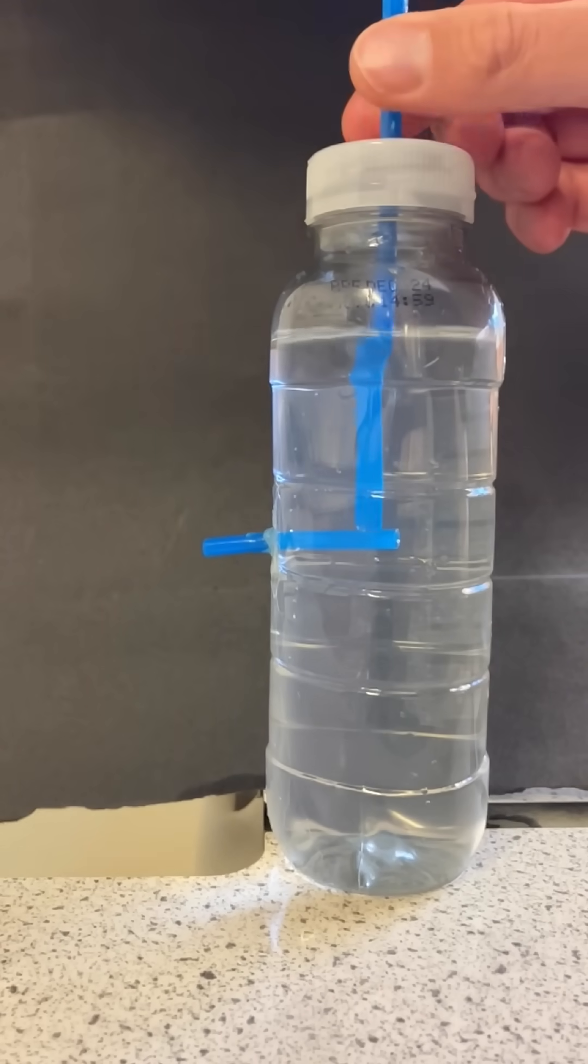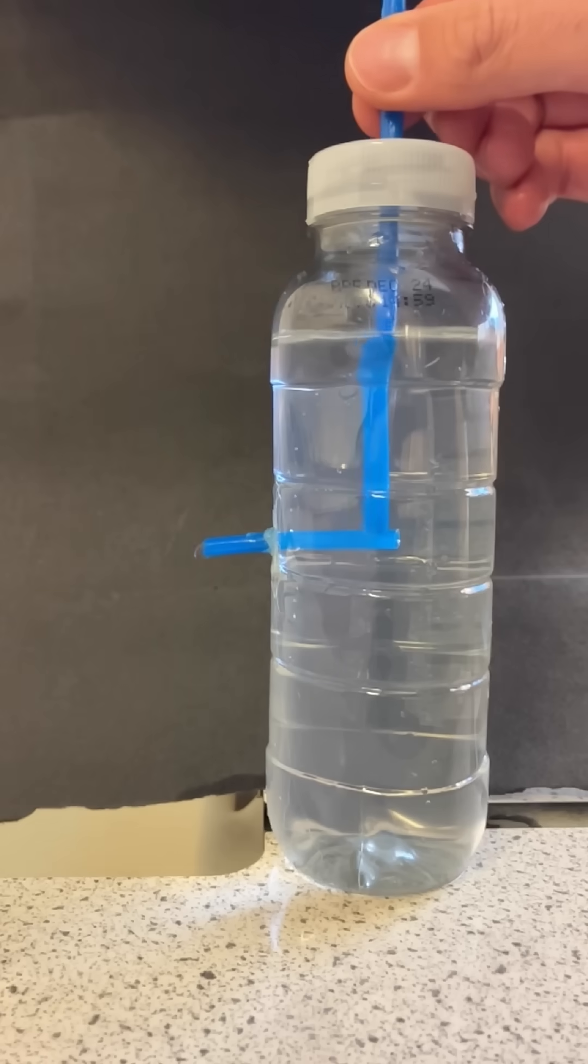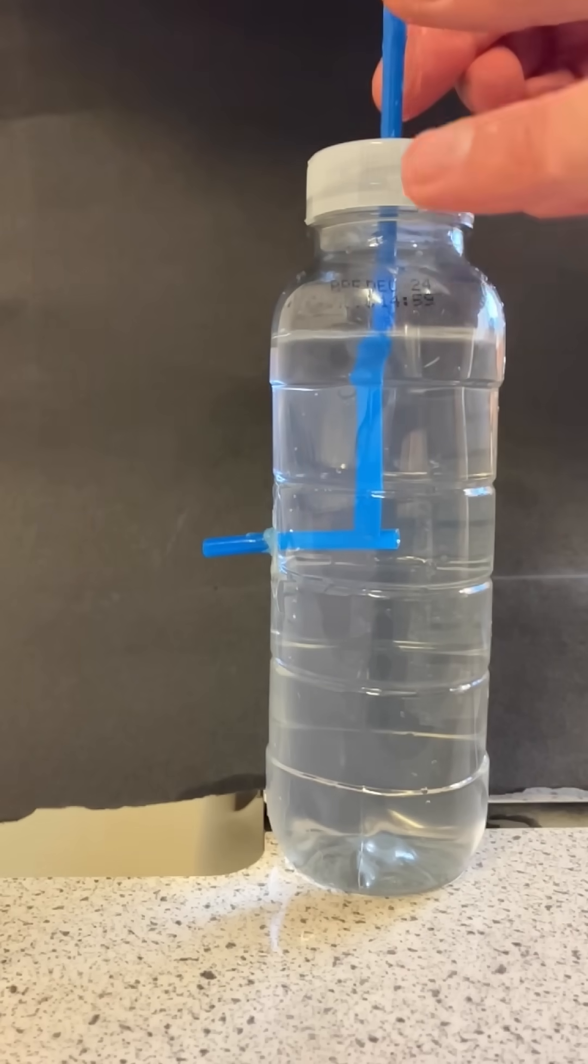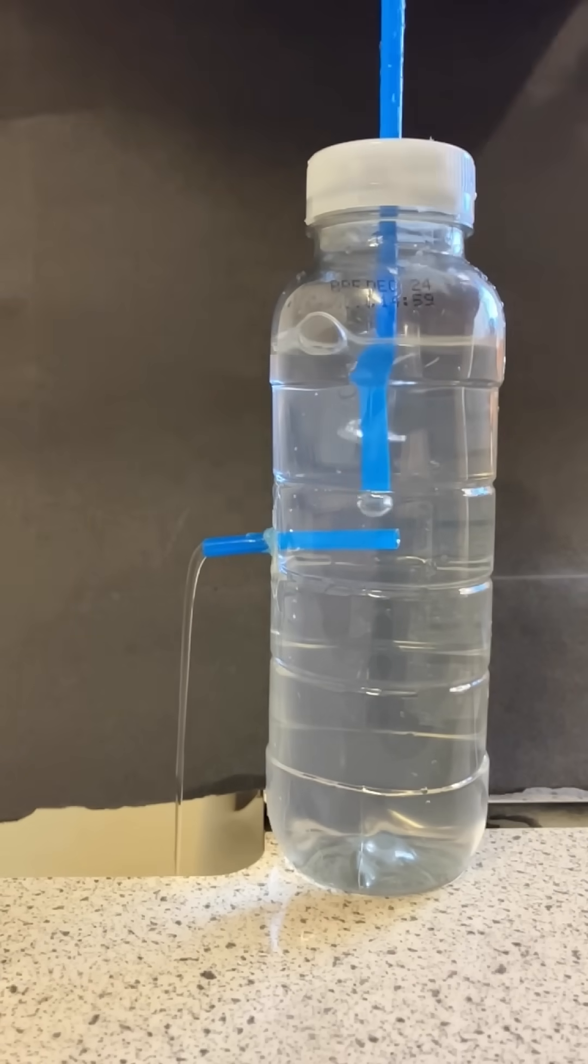This then increases the pressure here, which in turn increases the pressure here to be greater than atmospheric pressure and pushes water out of the horizontal straw.